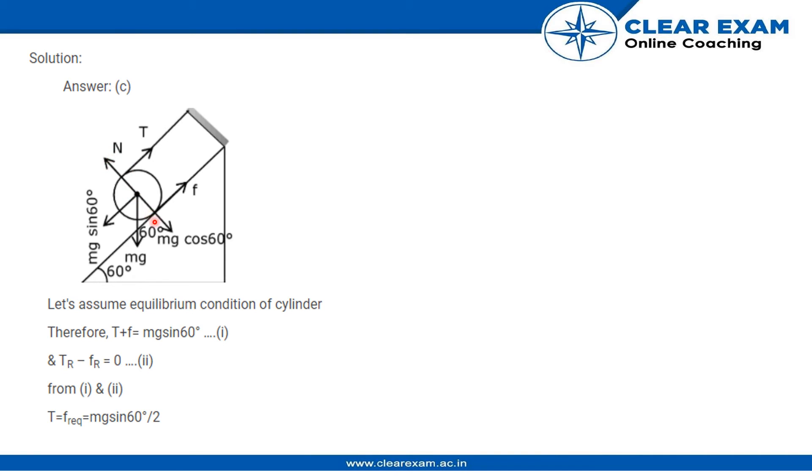So let's focus on the first equation. We have tension due to rope minus friction due to rope to be equal to zero. Therefore, we have tension to be equal to mg sin 60° upon 2.